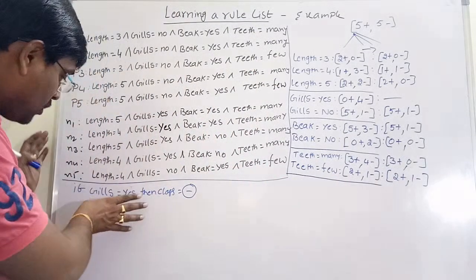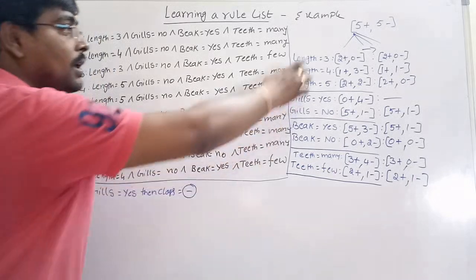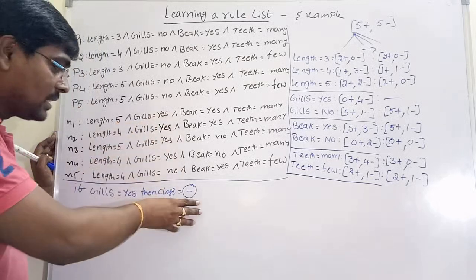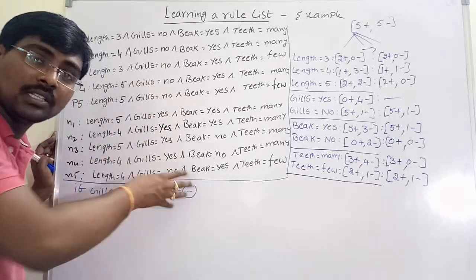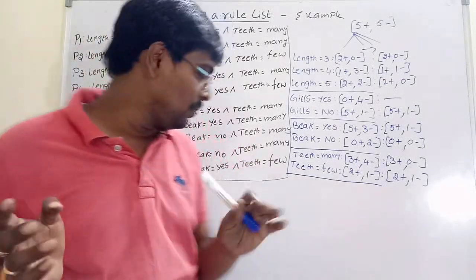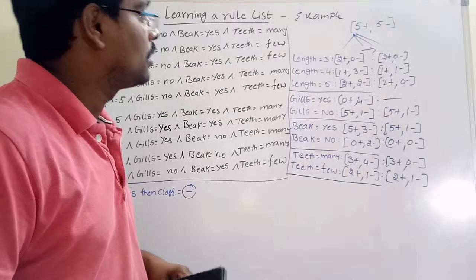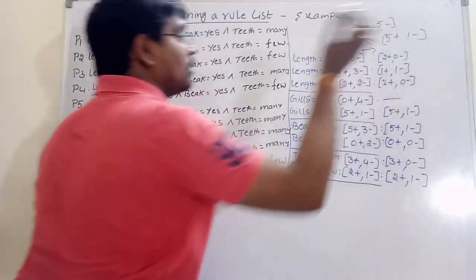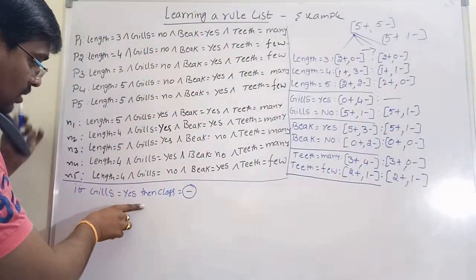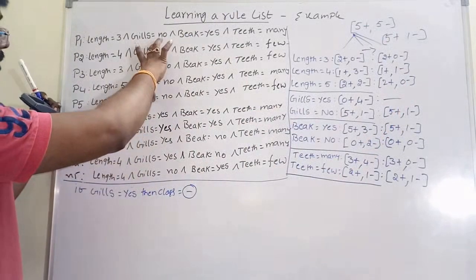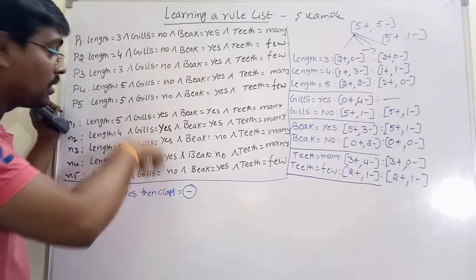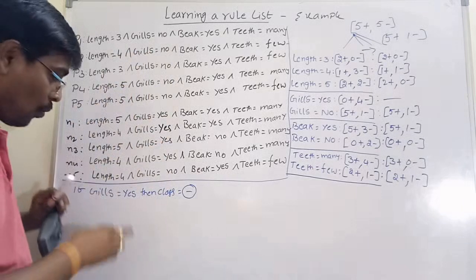So that is what we are doing. The first rule is: if gills is equal to yes, then in all cases that class is negative — we remove those instances from our example. After applying gills equal to yes, the five positives remain and the four negatives are eliminated. Result: five positives and one negative available.